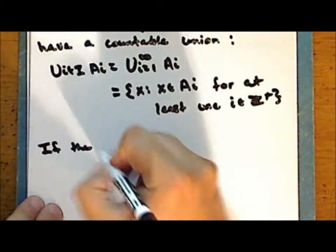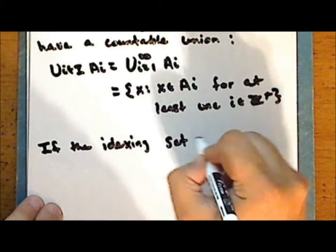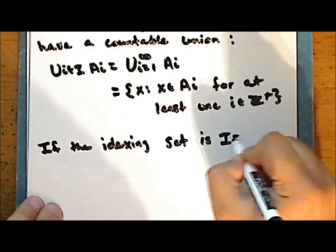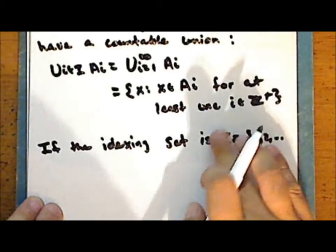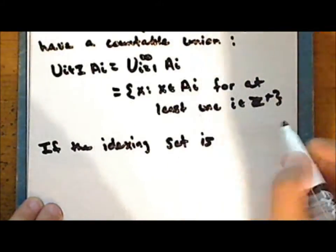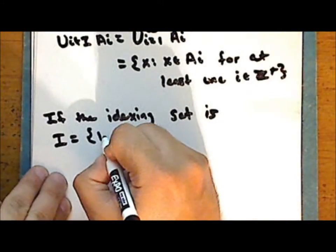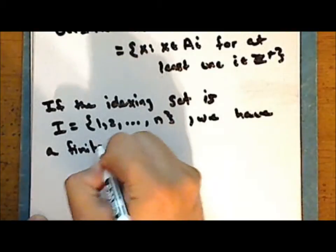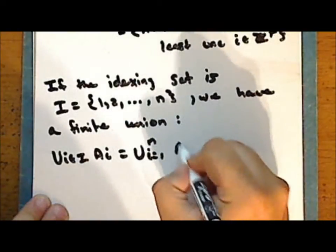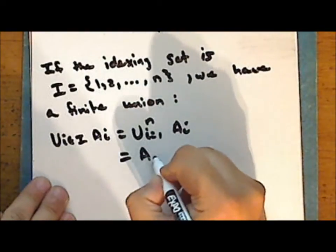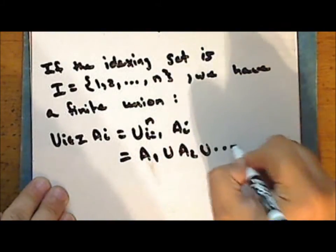If the indexing set is a subset of the positive integers — say the set containing 1, 2, and so on up to some positive integer n — we have a finite union. This union is written as the union from i equals 1 to n of A sub i, or simply A sub 1 union A sub 2 union ... union A sub n.